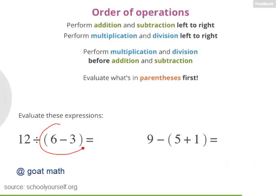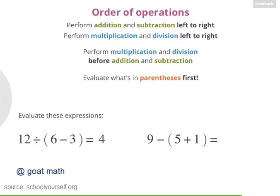Over here, you first evaluated what's in the parentheses: 6 minus 3, which equals 3. Then 12 divided by 3 equals 4, which is the correct answer. And over here, first you added 5 and 1 to get 6. And then 9 minus 6 equals 3.